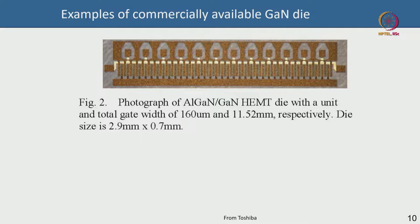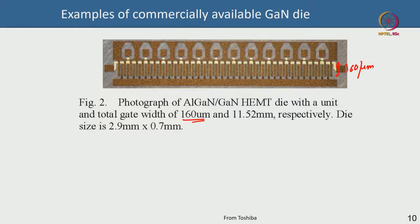This other device, from a commercial entity such as Toshiba, is an X-band device operating around 8–12 GHz. The unit gate width is 160 µm — close to the ~150 µm rule of thumb for X-band. There are approximately 30 to 50 gate fingers, and the total gate width is 11.2 mm.